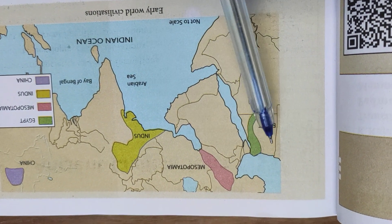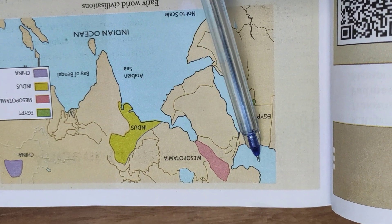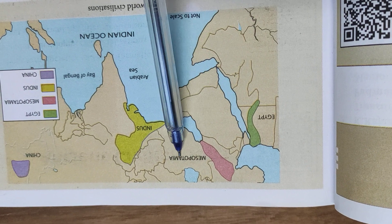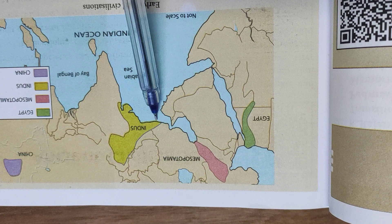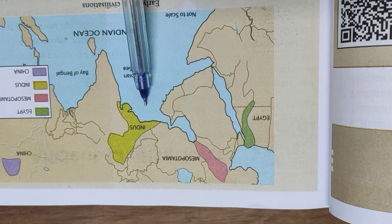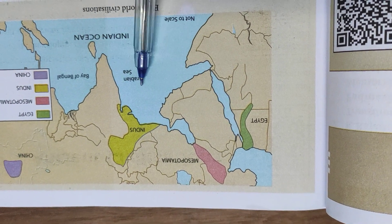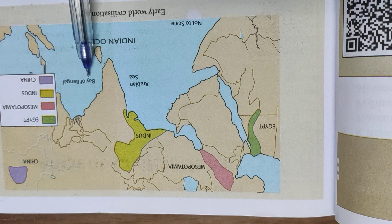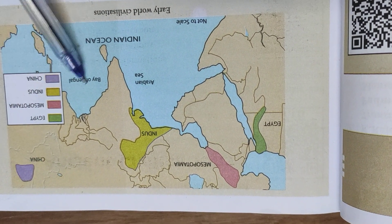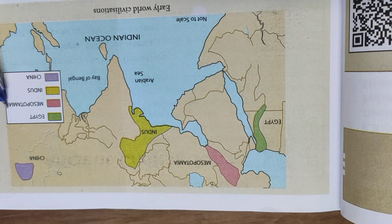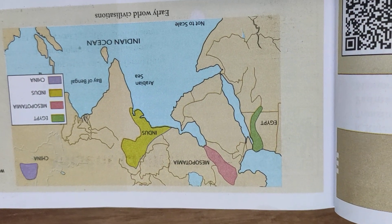In early times, the people — the Egyptians, Sumerians, people of Europe, Greece, Rome, the Mesopotamians — used the Red Sea and the Persian Gulf for trade. Through the Bay of Bengal, they had trade contact with China, Singapore, Malaysia, and this region.